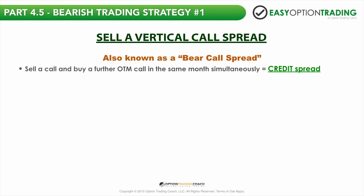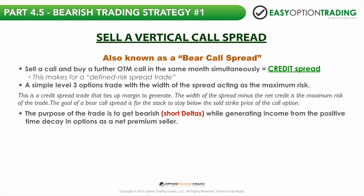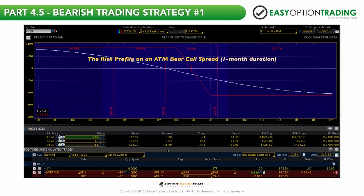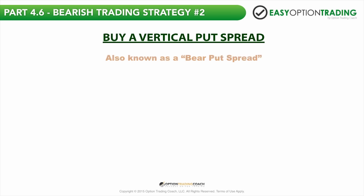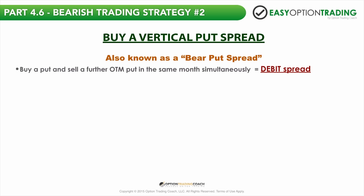Selling a vertical call spread complements the bull put spread, but you flip that around — this is called the bear call spread. The purpose of the trade is to get bearish, or get short deltas, while generating income from positive time decay in options. As a net premium seller, the main things you want to understand are: how much are you risking, where is your break-even, and at which strike price do you want the security to stay under at expiration.